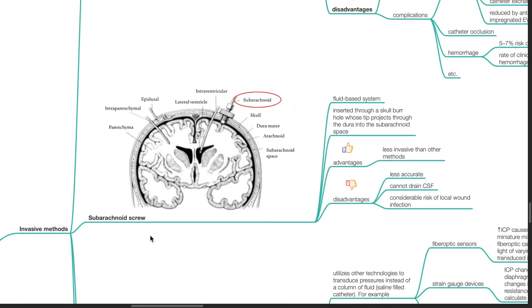Subarachnoid screw. It is a fluid-based system. It is inserted through a skull burr hole whose tip projects through the dura into the subarachnoid space. Advantages: It is less invasive than other methods. Disadvantages: It is less accurate, cannot drain CSF, and considerable risk of local wound infection is present.